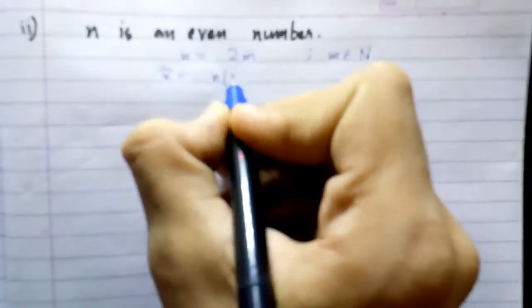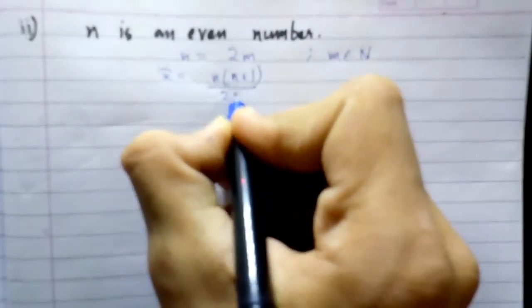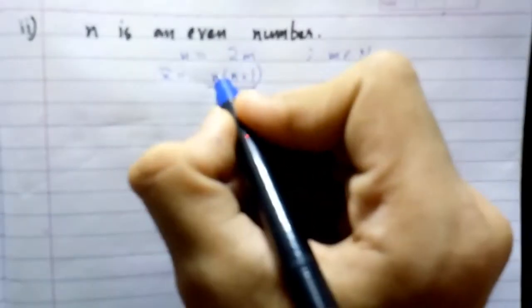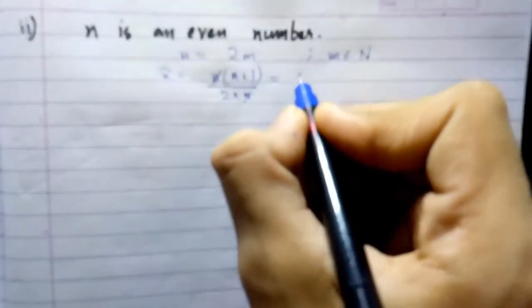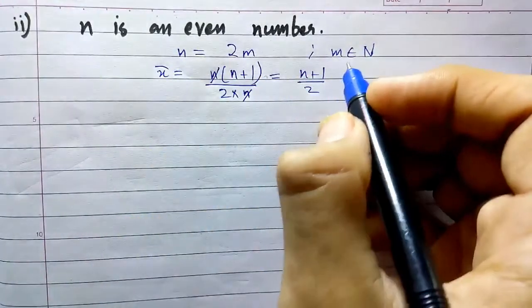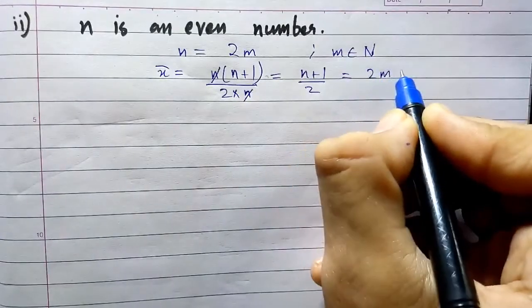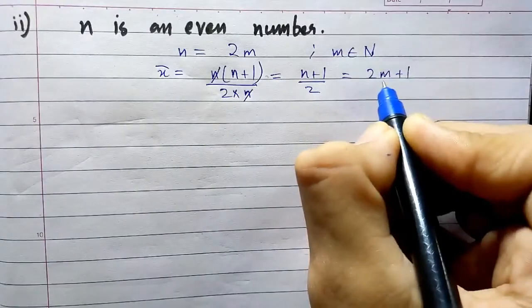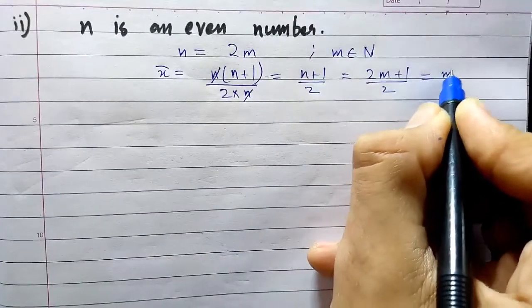That's n(n+1)/2 divided by n. We have some cancellations, giving us (n+1)/2. Putting the value of 2m into n, we can write it like this.